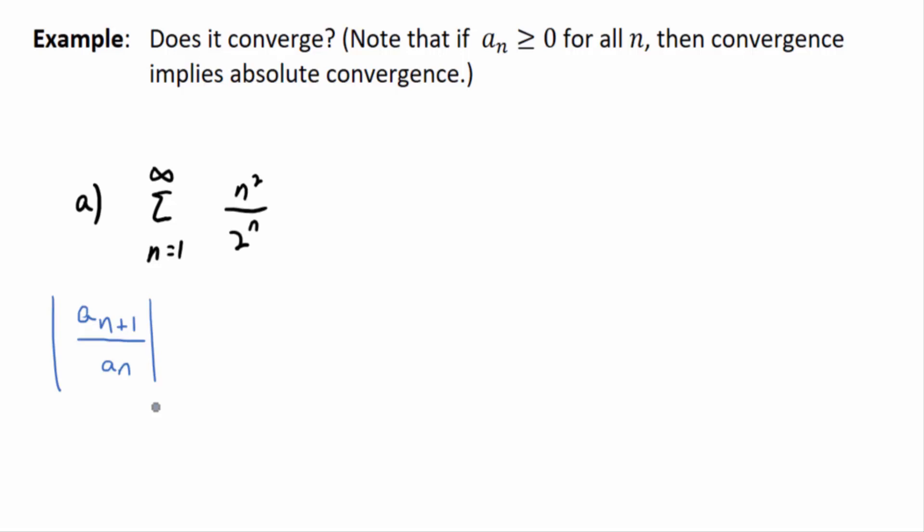The absolute value of AN plus 1 divided by AN. So, let's examine that ratio. N squared divided by 2 to the N, positive. So, do I need absolute values? No. But I put it at the very beginning just to remind you. What is AN plus 1? So, this is AN. What's AN plus 1? Absolute value. Just stick in a plus 1 wherever you see an N. N plus 1 quantity squared over 2 to the N plus 1. And then, you have to divide that whole thing by just the original formula. N squared divided by 2 to the N.